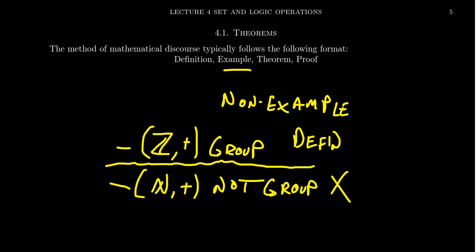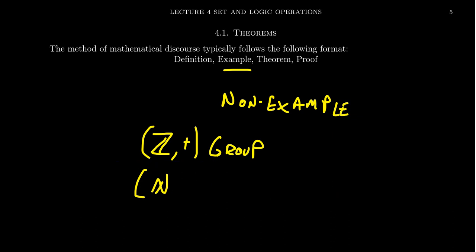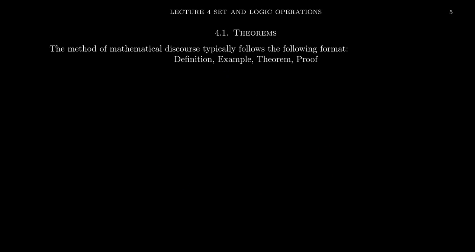After the reader has been given a sufficient framework to understand the ideas being considered, typically through examples and such, then the reader will be presented probably with theorems. Remember, theorems are statements that we can prove to be true. The theorem is stated and then followed up by a proof. So these often go hand in hand.